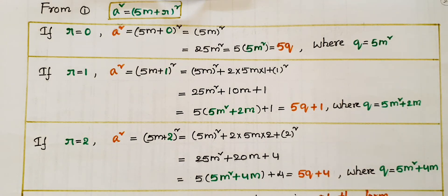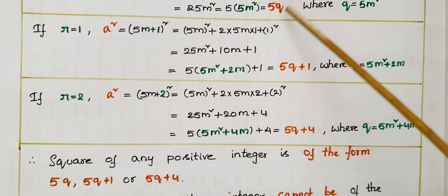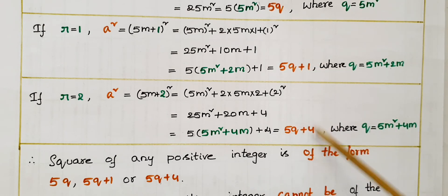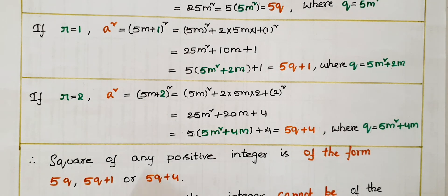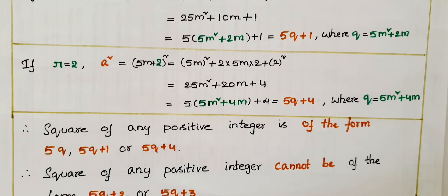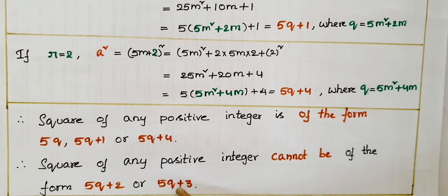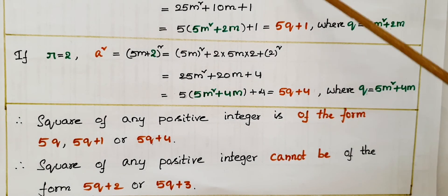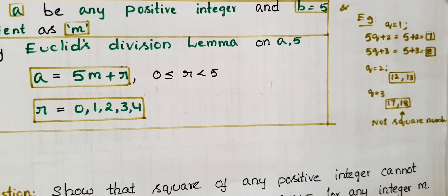Observing the squares of these positive integers, they are in the form of 5q, 5q plus 1, and 5q plus 4. Therefore, the square of any positive integer is of the form 5q, 5q plus 1, or 5q plus 4. Therefore, the square of any positive integer cannot be of the form 5q plus 2 or 5q plus 3, because these two forms do not appear in these calculations.